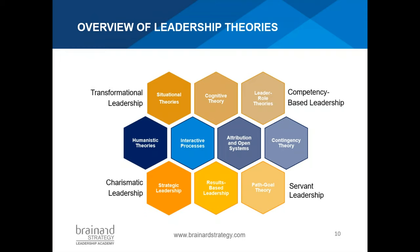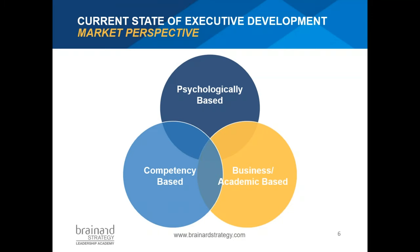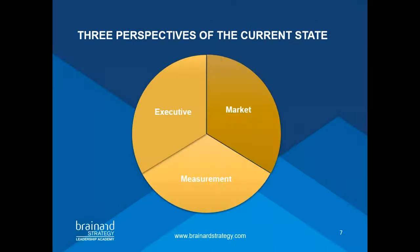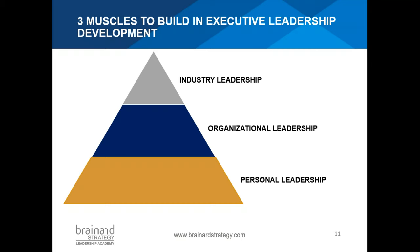Many internally built programs, academic programs, and psychologically based programs are just that — standalone. One of the things I've learned about executive development is that when we combine theories and approaches, we develop an integrated way of developing leaders. At Brainerd Strategy, we use a Venn diagram of three bubbles and invite our design team to discuss where we need to be overweight or underweight across psychologically based, competency boost, and business-academic design elements.